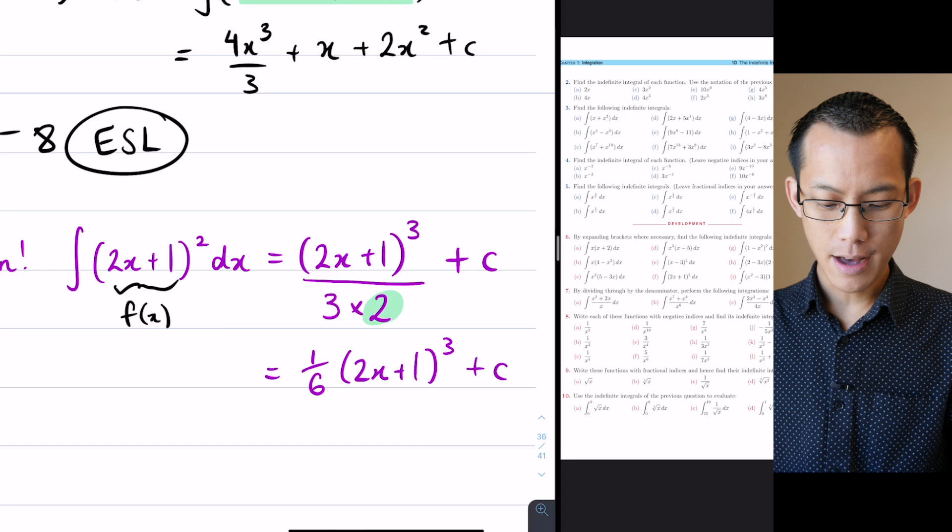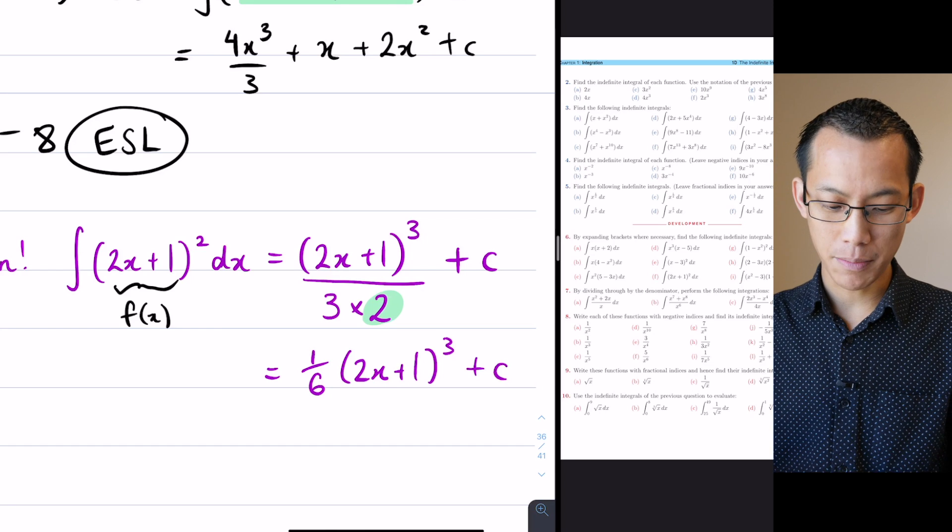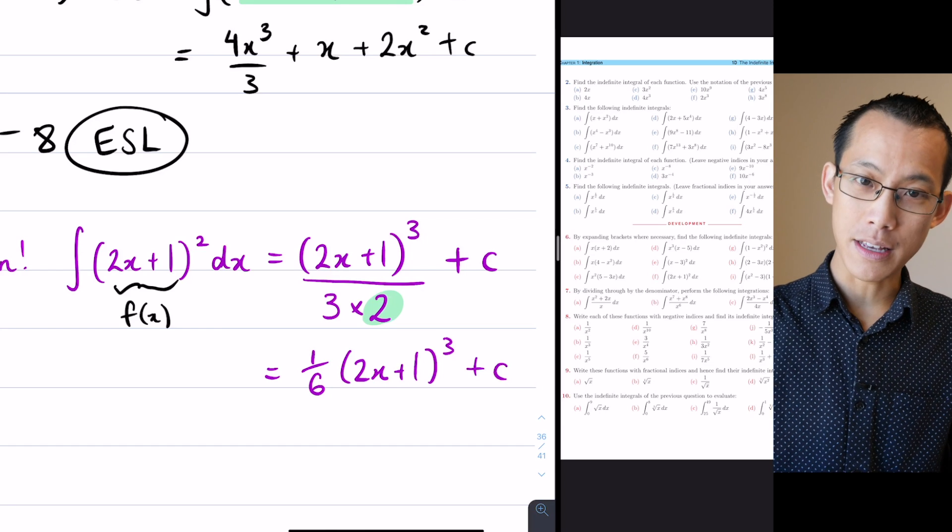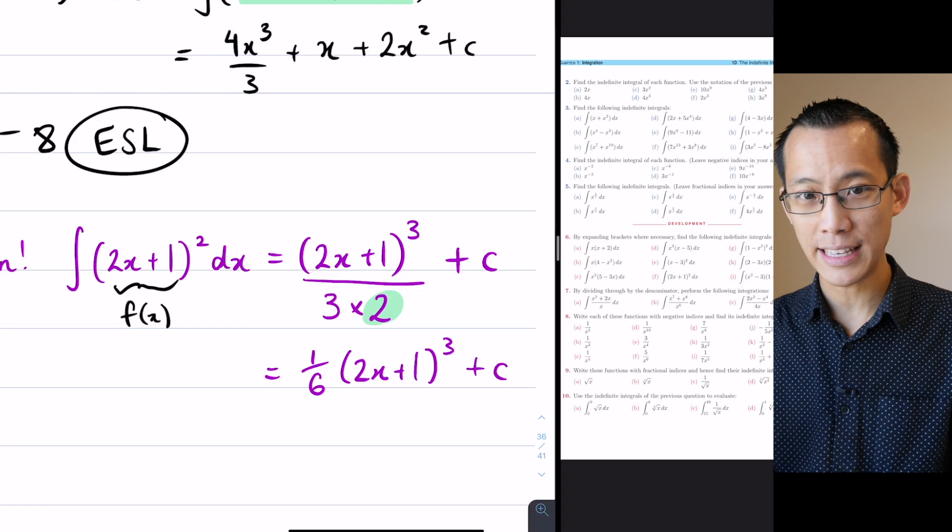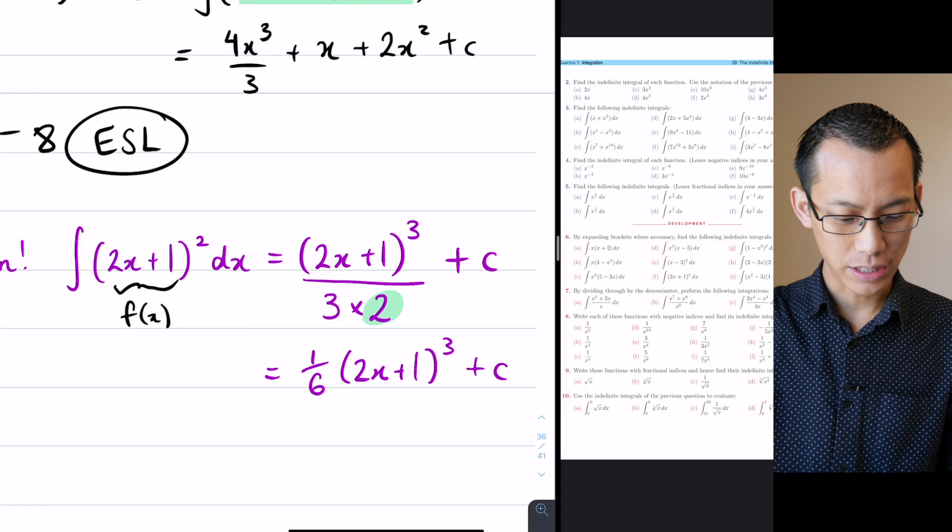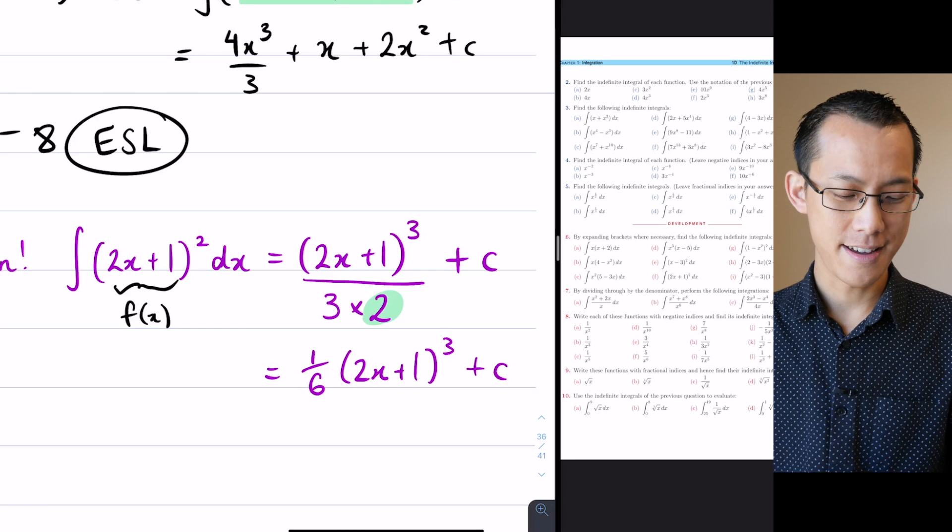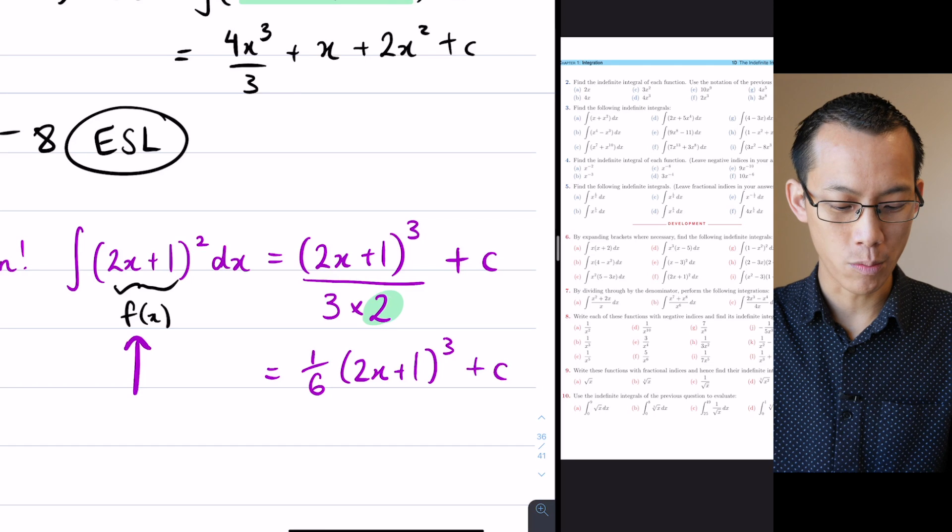You can see that 3 will come out the front, I'll reduce the index by 1 it becomes 2, and the 2 from the inside derivative comes out the front, completely canceling the 1/6, which leads us back to the integral that we started with.